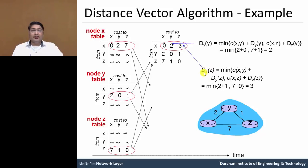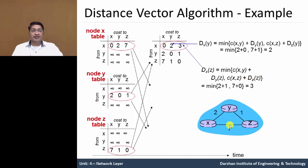Now for d(x, z): the equation takes the minimum of cost c(x, y) which is 2, plus d(y, z) which is 1 — giving 3 — compared with cost c(x, z) which is 7, plus d(z, z) which is 0 — giving 7. So minimum of 3 and 7 is 3. We denote this value as 3 for x to z.